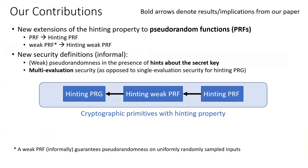Our contributions are as follows. In this paper, we present new extensions of the hinting property to PRFs and weak PRFs, where the pseudorandomness properties hold in the presence of hints about the secret key across multiple evaluations of the PRF. A hinting PRF implies a hinting weak PRF, which in turn implies a hinting PRG.